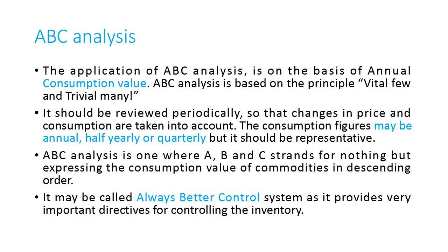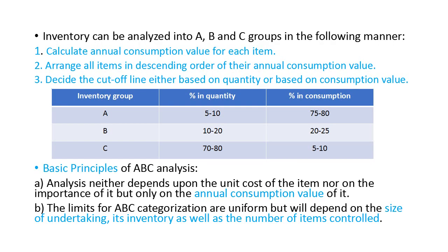ABC stands for Always Better Control and is the best method for inventory control analysis. The annual consumption value is calculated — though it can also be done half-yearly or quarterly. Drugs are categorized: A for highest consumption value, B for medium, and C for lowest. The highest consumption value is provided by only 5 to 10% of drugs, the lowest by 70 to 80% of drugs, and the medium by 10 to 20%.